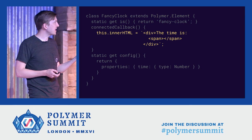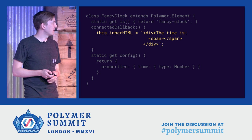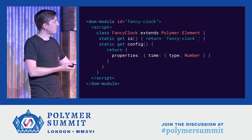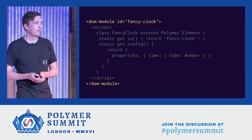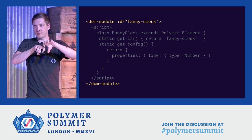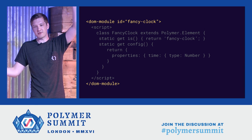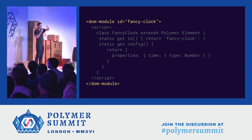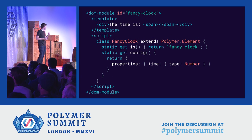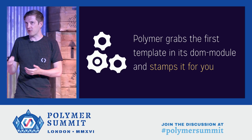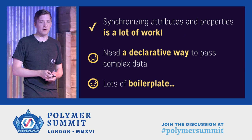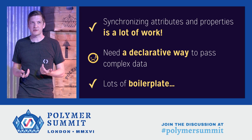The next thing I want to do is clean up the innerHTML — it's a little funky having that in my element. I'm going to wrap everything in a DOM module with an ID that matches my element's is property. This is so that if you run your element through a build tool that separates your JavaScript and HTML into a bundle, Polymer can trace its steps back and find your template and associate it with your element. Then I drop a template inside. Polymer is just going to take the first template it sees in the DOM module and pop that into your shadow DOM — I don't have to write any of that imperative code myself.